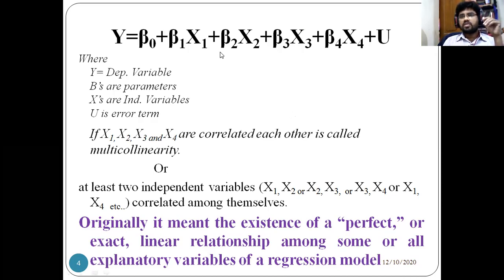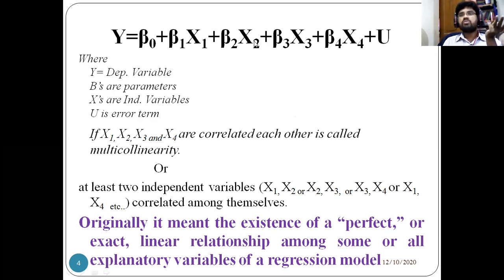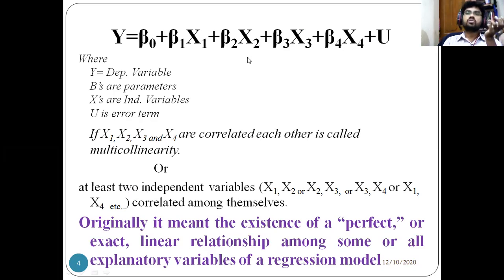For example, as I mentioned, there is a relationship between independent variables x₁, x₂, x₃. If you consider at least two independent variables — x₁ and x₂, or x₂ and x₃, or x₃ and x₄, or x₁ and x₄, or x₂ and x₄ — if they are correlated with each other, that is called multicollinearity.